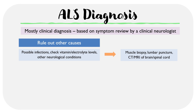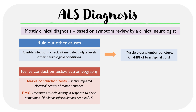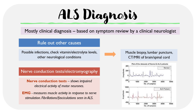In some instances, patients may also undergo nerve conduction studies or electromyography. These are different ways of determining whether the signaling within motor neurons is impaired. In particular, electromyography may show fibrillations or fasciculations, which are commonly seen in ALS.